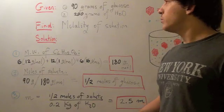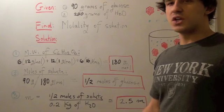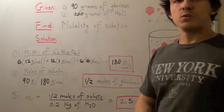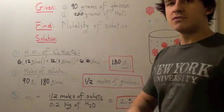The question tells us that we have 90 grams of glucose and 200 grams of H2O, and we want to find the molality of the solution.